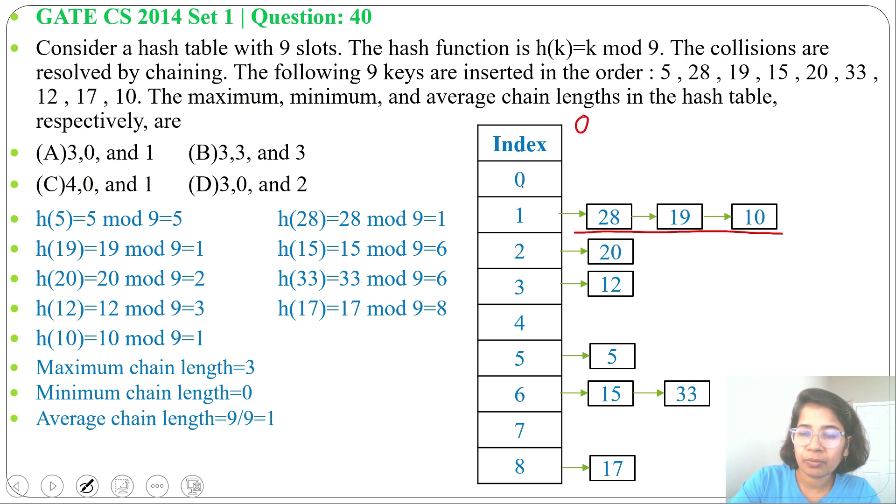For index 0, chain length is 0. For index 1, chain length is 3. For index 2, chain length is 1. For index 3, chain length is 1. For 4, chain length is 0. For 5, length is 1.